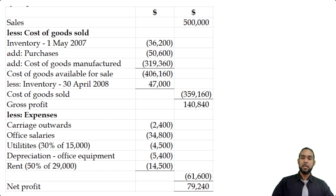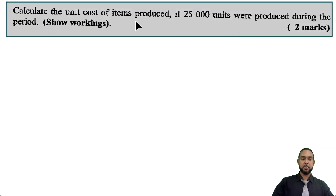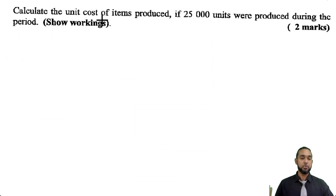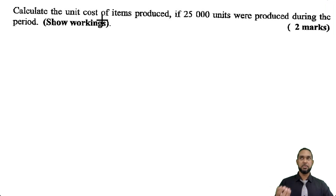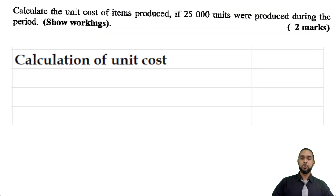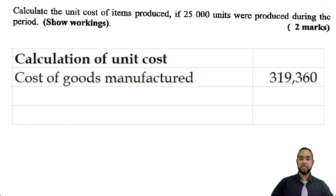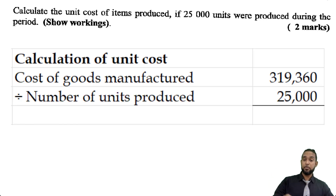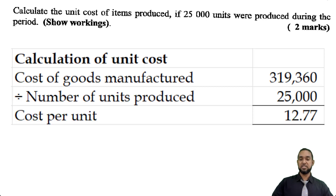The last part of the question asks us to calculate the unit cost of items produced if 25,000 units were produced during the period. The unit cost is simply the total cost of goods manufactured divided by the number of units. We take $319,360 divided by 25,000, which gives us approximately $12.77 per unit.